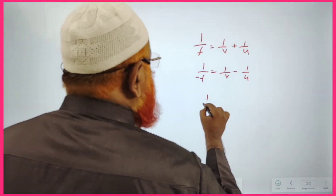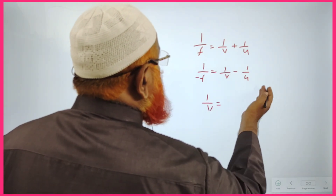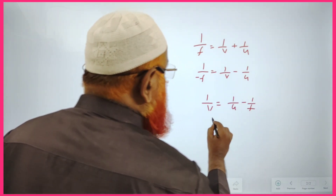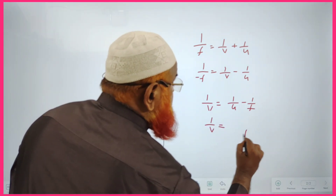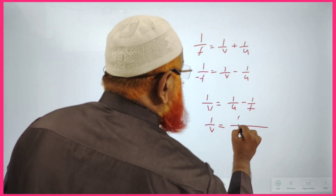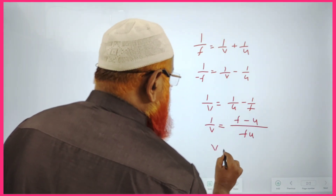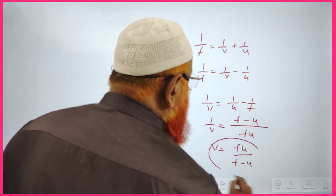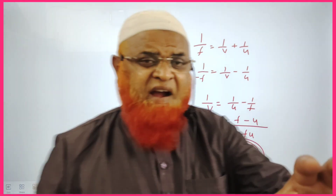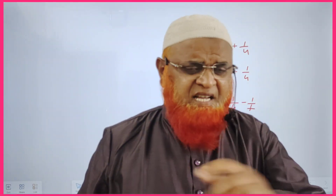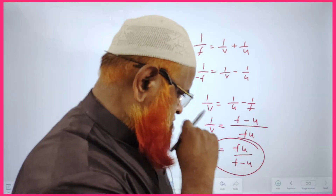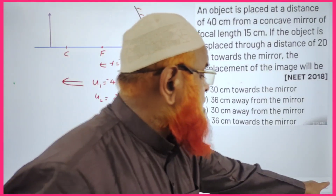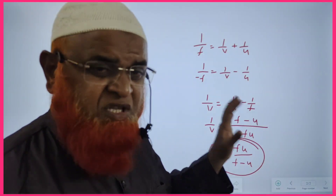From the mirror formula, 1/v = 1/u − 1/f, which gives v = fu/(f − u). This is the shortcut formula to find the image distance, and we will use it to solve this problem in a super simple way.